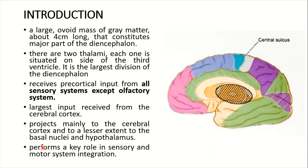The thalamus performs a key role in sensory and motor system integration. This is very important. Hardly have I ever found a chapter of a neuroanatomy book where the thalamus is not mentioned in any of the important lectures. The thalamus is mentioned everywhere.